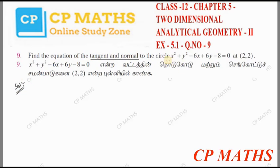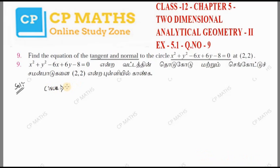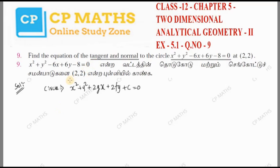We have the general form of the circle equation: x² plus y² plus 2gx plus 2fy plus c equal to 0. This is a simple circle equation and this is the formula we will use.